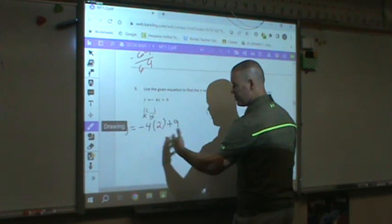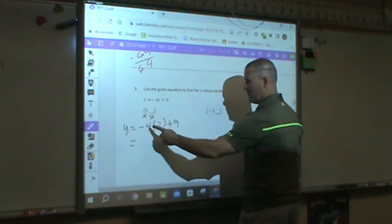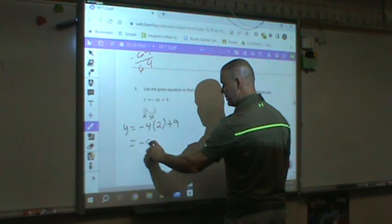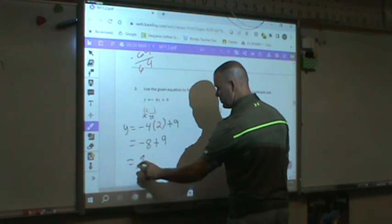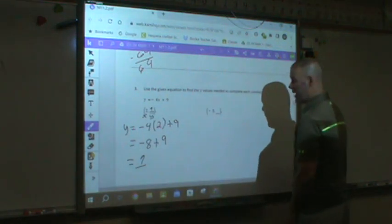So here, here's my work. Watch. It's a couple of simple steps. What's a negative 4 times a positive 2? It gives me a negative 8 plus 9. What is negative 8 plus 9? That's positive 1. So that's what goes in there. That's what you should have got.